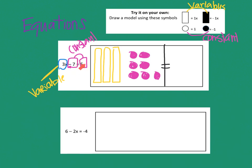Then we have the equal sign, and then positive 5. I have the equal sign in my drawing, and positive 5 would be open circles that are not shaded in: 1, 2, 3, 4, 5. So now I'm finished. The 3x is shown by rectangles, minus 7 by shaded circles, and positive 5 by open unshaded circles.